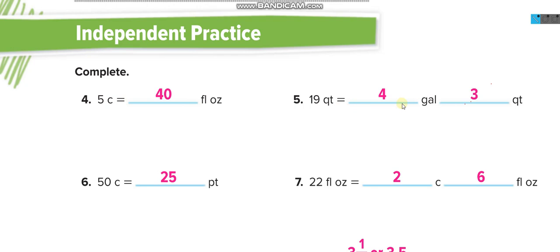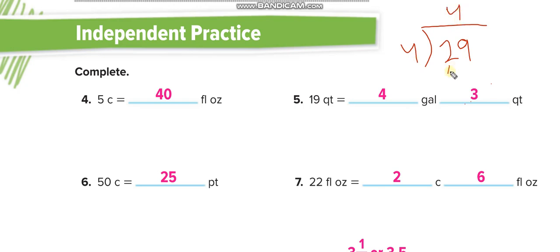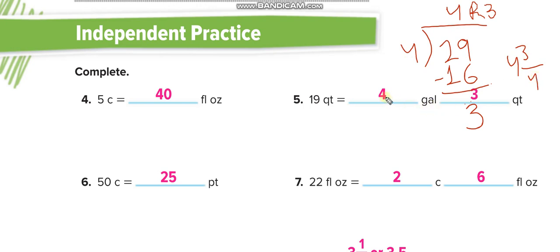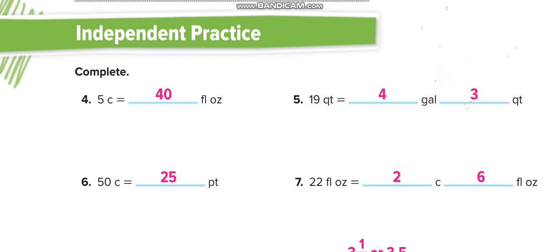Next: 19 quarts equals how many gallons and how many quarts? One gallon equals 4 quarts, and we're converting from smaller to larger, so divide by 4. 19 divided by 4: 4 times 4 is 16, remainder 3. The answer is 4 whole gallons with remainder 3 — written as 4 and 3/4 gallons, or 4 gallons and 3 quarts. Try the independent practice by yourself and match your answers through this video.